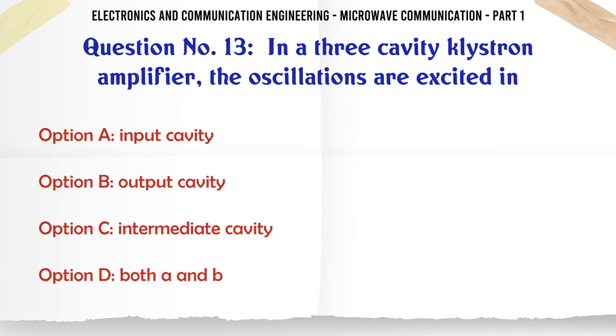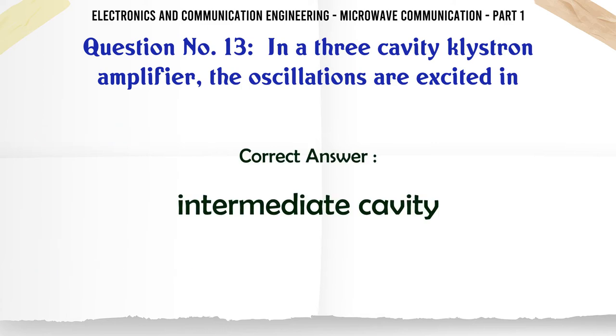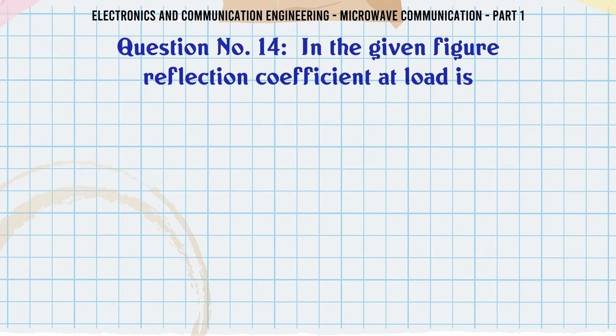In a three-cavity klystron amplifier the oscillations are excited in: A. Input cavity, B. Output cavity, C. Intermediate cavity, D. Both A and B. The correct answer is Intermediate cavity.